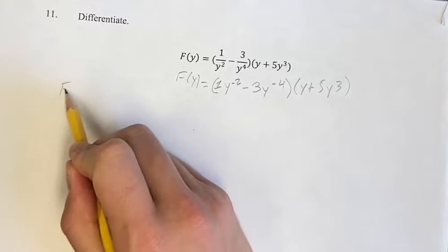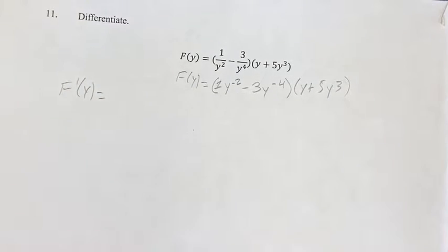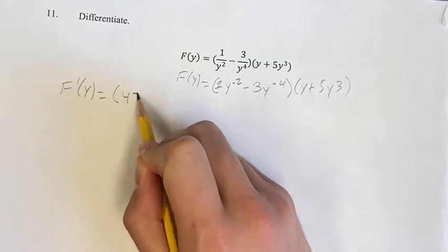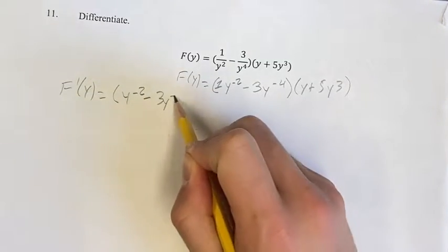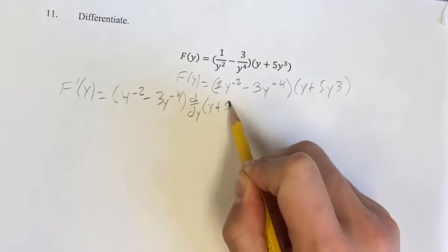Actually getting to the derivative, we're going to use the product rule. So that's going to start out with the first term, y to the negative 2 minus 3y to the negative 4, times the derivative of the second term, y plus 5y cubed.